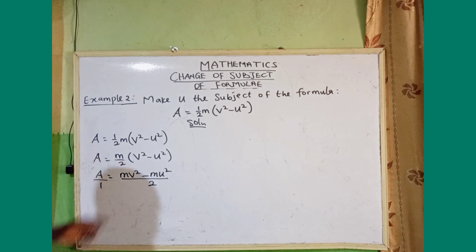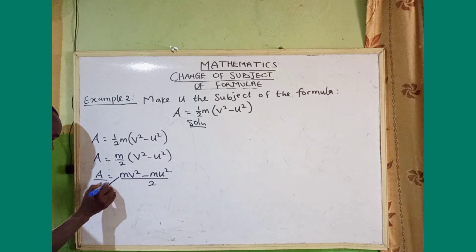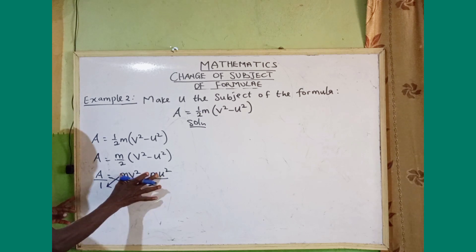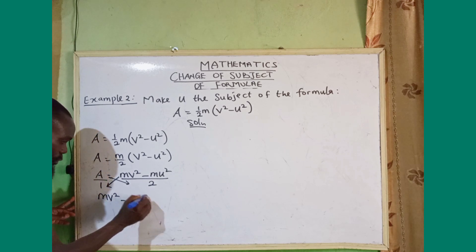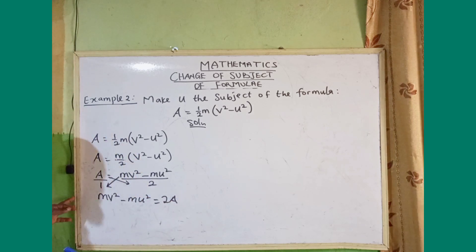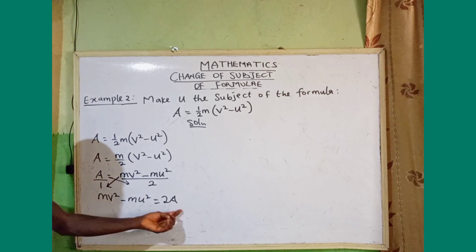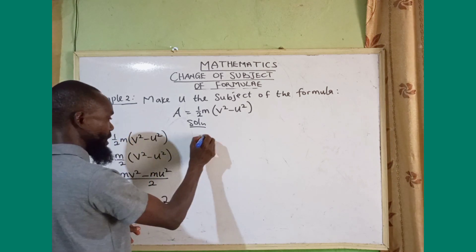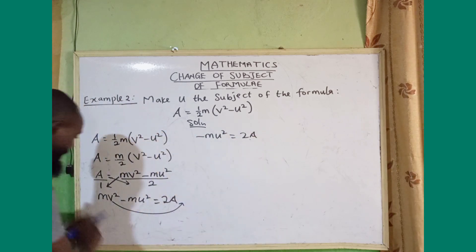The next step is to cross multiply. Multiplying across: mv squared minus mu squared is equal to two times a, giving 2a. Now I need my u, so I take mv squared to the other side, giving minus mu squared equals 2a minus mv squared.